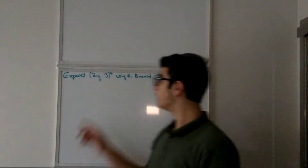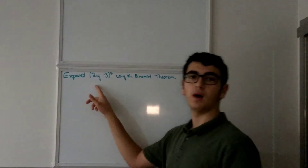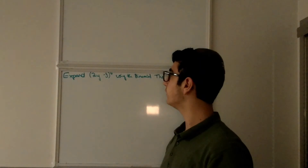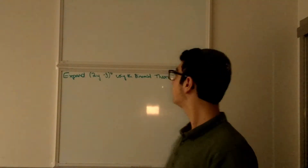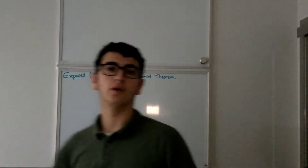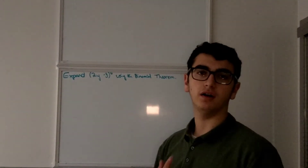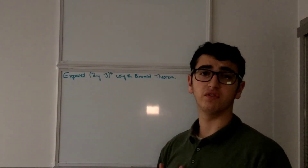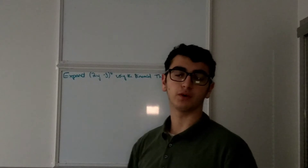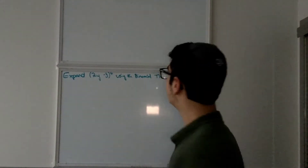In this problem I'm going to expand the quantity of 2y minus 3 to the 4th using the binomial theorem. First of all, I'm just going to expand it without regarding the coefficients, and then I'm going to calculate what the coefficients are and then put both of them together.